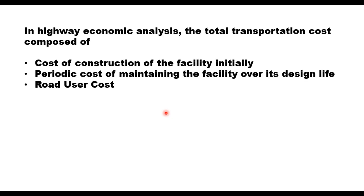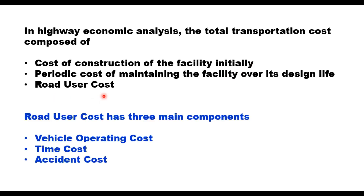In highway economic analysis, the total transportation cost is composed of: cost of construction of the facility, periodic cost of maintaining the facility over its design life, and the third is road user cost. The first two are collectively known as highway cost. Road user cost has three components: vehicle operating cost, time cost, and accident cost.